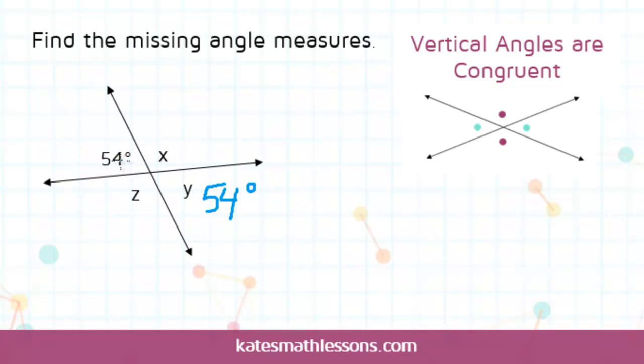These are right next to each other, and this is called a linear pair, because when you put them right next to each other, they form this straight line right here. We know that a straight line is 180 degrees.